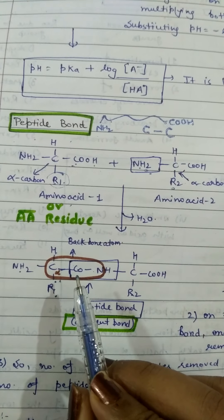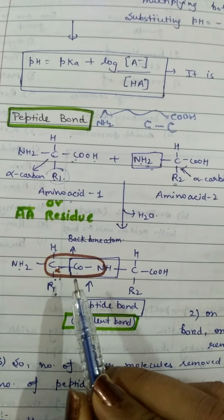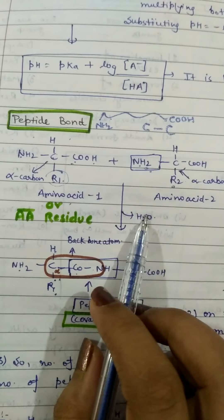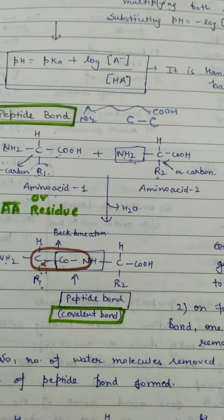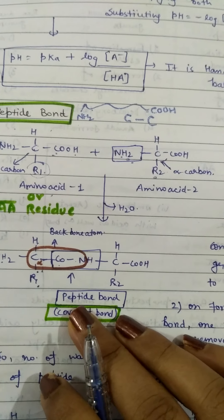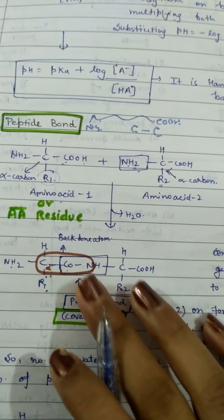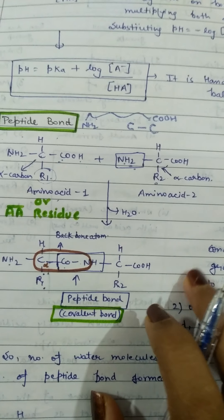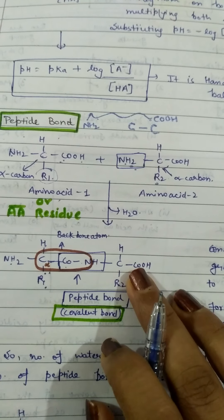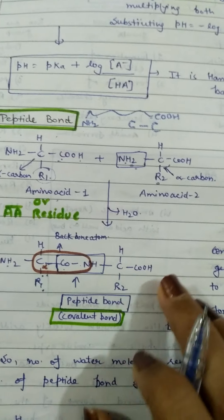This is the bond which is formed between carboxyl group and NH2 group after the removal of water. The peptide bond is very simple. When you attach the third amino acid, the NH2 group will remove water from here, and then there will be another bond.